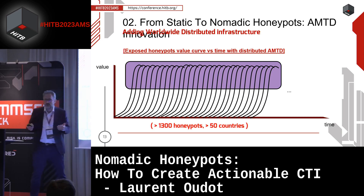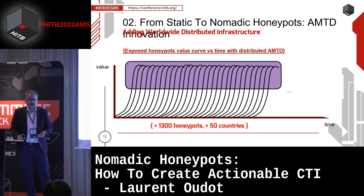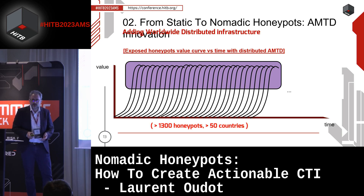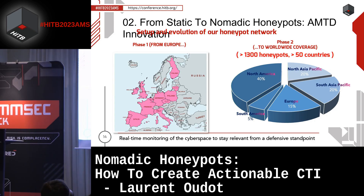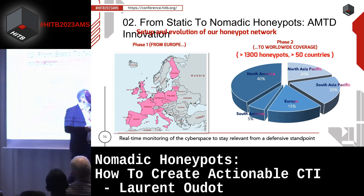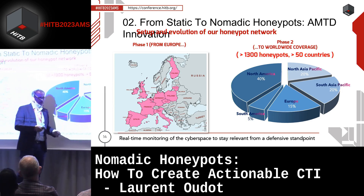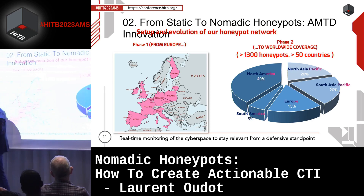The main issue is you need to move a lot over the internet — changing the location of your honeypot a few times a day or a few times a week. You can't do it on your own infrastructure, so we did it in the cloud. We ended up with more than 1,000 honeypots, mainly in North America but also North Asia, South Asia, Europe, and South America — 50 countries.